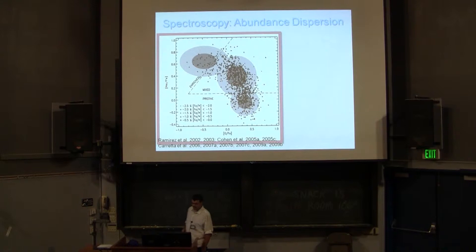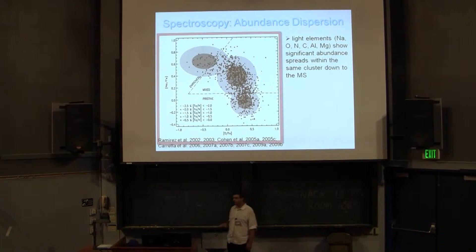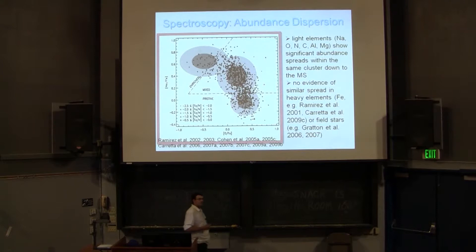We also see this in spectroscopy. There are studies showing different anticorrelations — a well-known one is the sodium-oxygen anticorrelation, a nice curve. People have shown this goes all the way down to the main sequence; it's an intrinsic property of the globular cluster. However, when you look at iron — the heavy elements from Type Ia supernovae — there's no spread. They all have the same iron enrichment but different enrichments in the light elements.